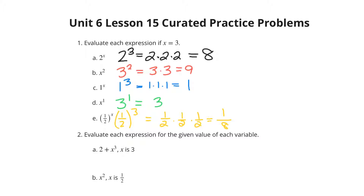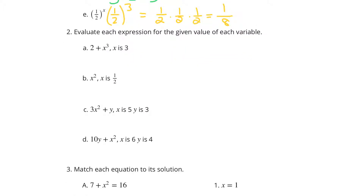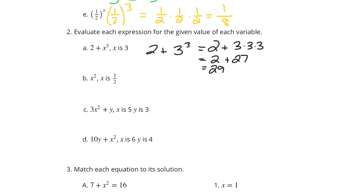Evaluate each expression for the given value of each variable. 2 plus x to the 3rd, where x is 3. That's going to be 2 plus 3 to the 3rd. You have to take care of that exponent first, so this is 2 plus 3 times 3 times 3, which is 2 plus 27, and 2 plus 27 is 29. For x squared if x is 1 half, this means 1 half squared, which is 1 half times 1 half. 1 times 1 is 1, 2 times 2 is 4, so 1 fourth.